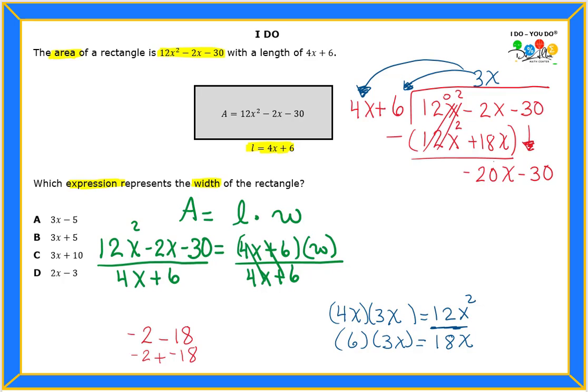Now notice how the 20x is negative. Then that tells me that my quotient will have a minus up there. So we're going to do the same thing.